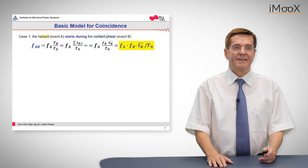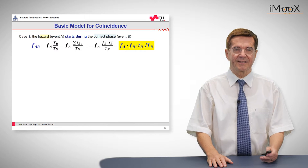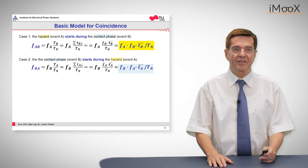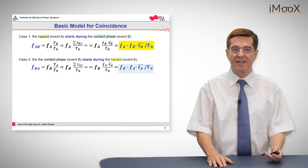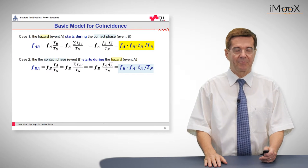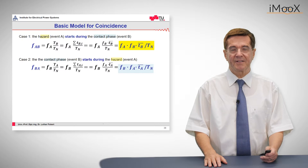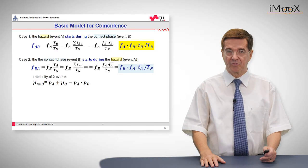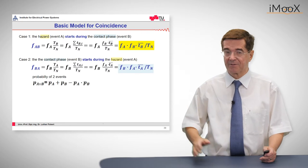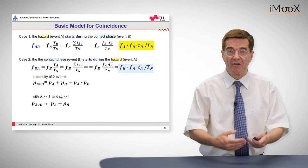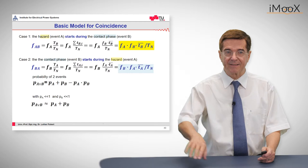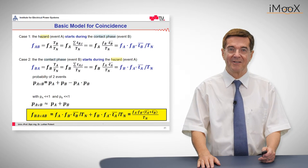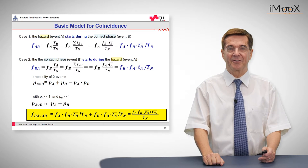So in short the hazard starts during the contact phase is given by the frequency FAB. Of course we can consider case 2, when the contact phase starts during the hazard and this is FBA and you only have to interchange the letters A and B but principally it's the same. And now we can have both situations. The probability of two events is well known as given by the sum of these single events minus the product but taking into account that these events have a low probability by themselves, the product can be neglected and we enter simply the sum of these. This is the miraculous formula of the frequency that a dangerous situation may occur during a hazard phase.